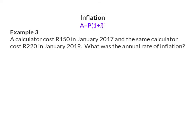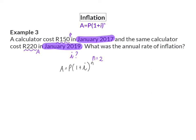Example 3. A calculator cost 150 Rand in January 2017, and the same calculator cost 220 Rand in January 2019. What was the annual rate of inflation? The starting value P was 150 Rand and the final amount A was 220 Rand. We need to determine the rate of inflation, or I. Our N value, or number of periods, is from January 2017 to January 2019, which means N will be 2 years. The formula for inflation is the same as compound interest, so N is in the exponent, and now I can substitute.